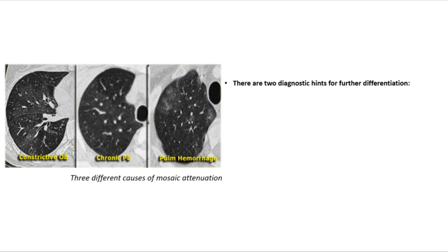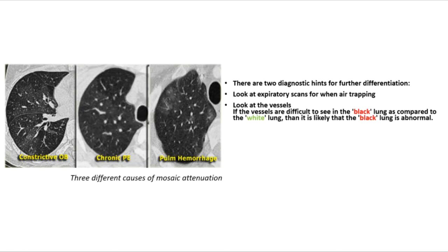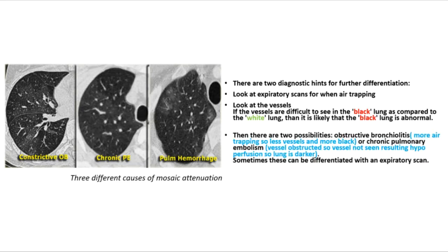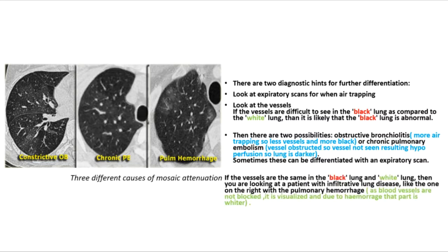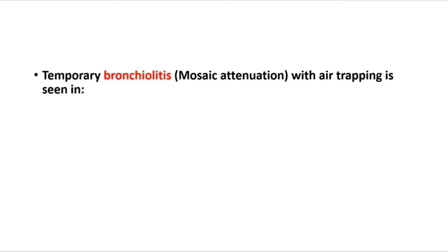Two diagnostic hints for differentiation: look at expiratory scans for air trapping, and look at the vessels. If vessels are difficult to see in the black lung compared to the white lung, the black lung is likely abnormal — suggesting either obstructive bronchiolitis (more air trapping, fewer vessels, more black) or chronic pulmonary embolism (vessel obstructed, hypoperfusion, darker lung). If vessels are the same in both, the patient likely has infiltrative lung disease such as pulmonary hemorrhage.